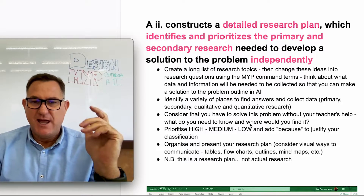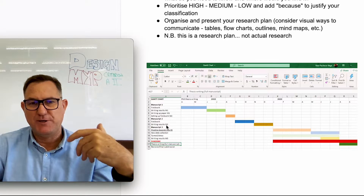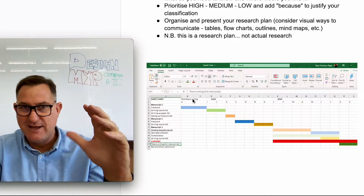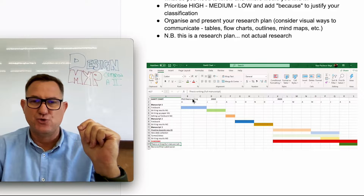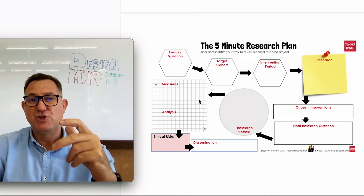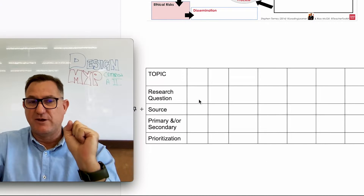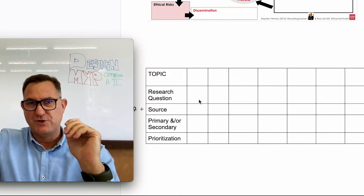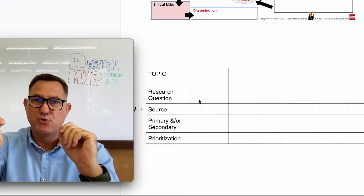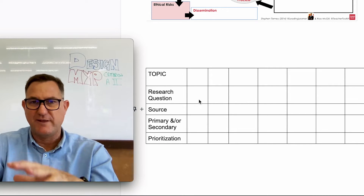I've got some examples here of research tables. One style is called a Gantt chart — on the left you have your topics, and you can organize them by priority and also by time, showing when and where you're going to do each piece of research over the course of lessons or days or weeks. Another format is a simple research table: list your research topics, rewrite them as research questions, state your sources in as much detail as possible, identify whether it's primary or secondary, and then add the priority — high, medium, or low — and why.